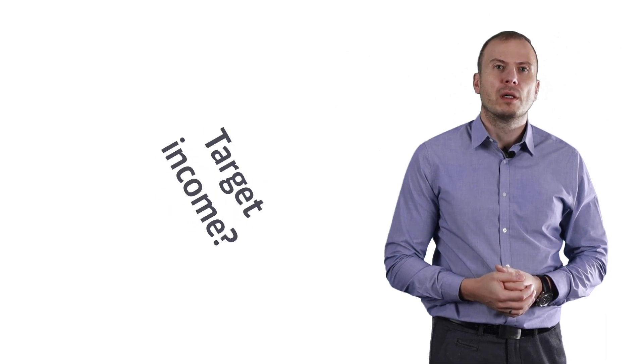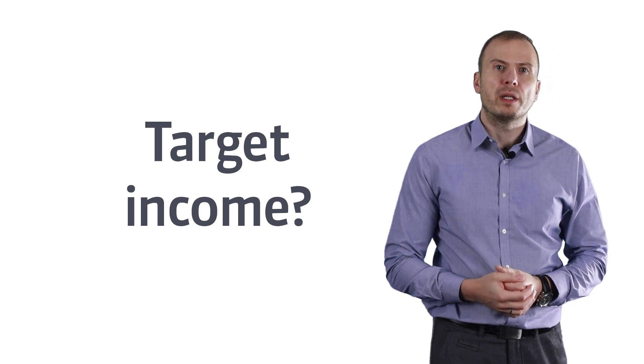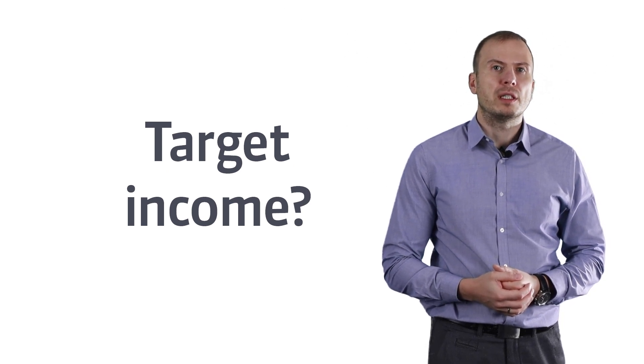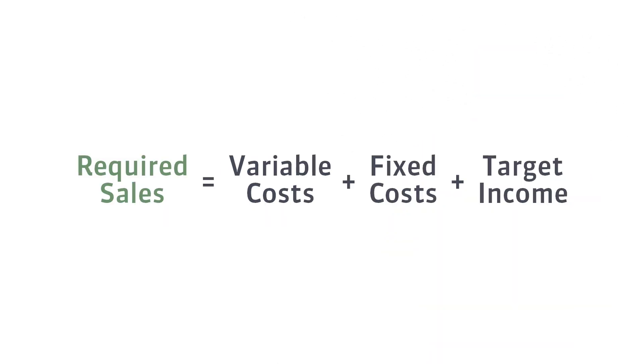Do you know how many units a company has to sell to reach the assumed net income? In this video you will learn what target income is and how many units each company has to sell to reach the assumed net income. As you already know, CVP analysis allows you to calculate not only the break-even point but also the target income.